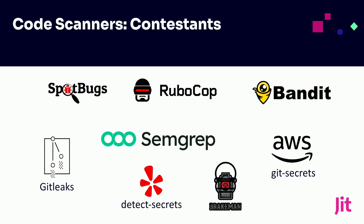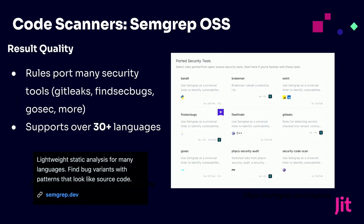Here's a list of open source code scanners — we grouped together SAST scanners and secrets detectors. There are quite a few tools: SpotBugs, Bandit, AWS GitSecrets, SEMGREP, GitLeaks, and others. We chose SEMGREP along with GitLeaks. Going back to our criteria on result quality, SEMGREP really helped from a security perspective — many different security tools are integrated within SEMGREP, like GitLeaks for secrets detection. It supported so many different languages as well. So we like SEMGREP open source for that reason.